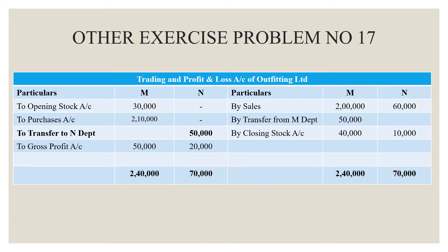Now let's see the trading account. On the debit side, opening stock is 30,000 — with N department and M department opening stock values listed. Purchases are 2,000,000 for M department and 50,000 worth of goods for N department.